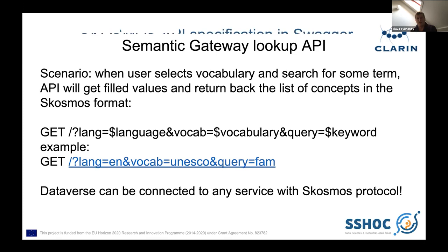The idea of the gateway is that if you have a one-to-one relation — linking a field to just one controlled vocabulary — you can remove the gateway and connect directly to a SKOSMOS instance without any change. We are now in discussion with Harvard University and other partners about how to merge this into the master branch so it will become available for everyone.